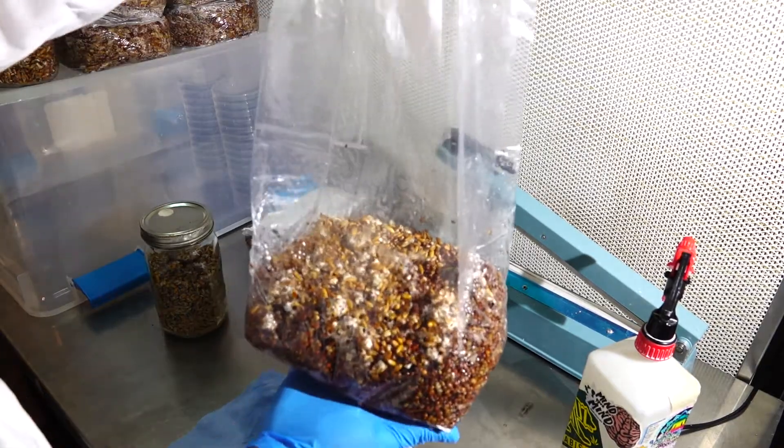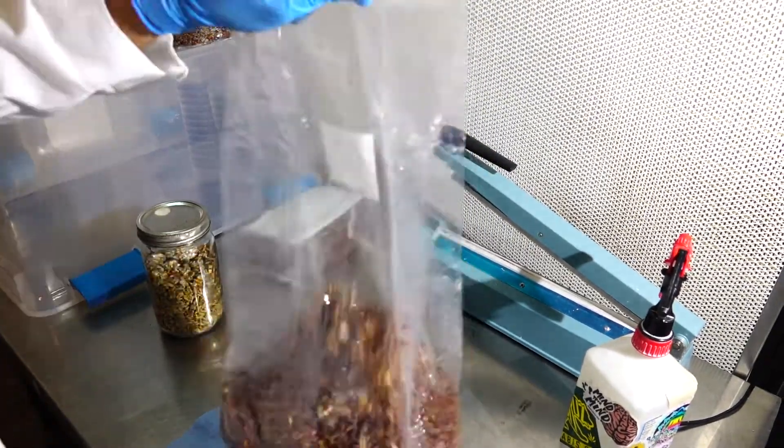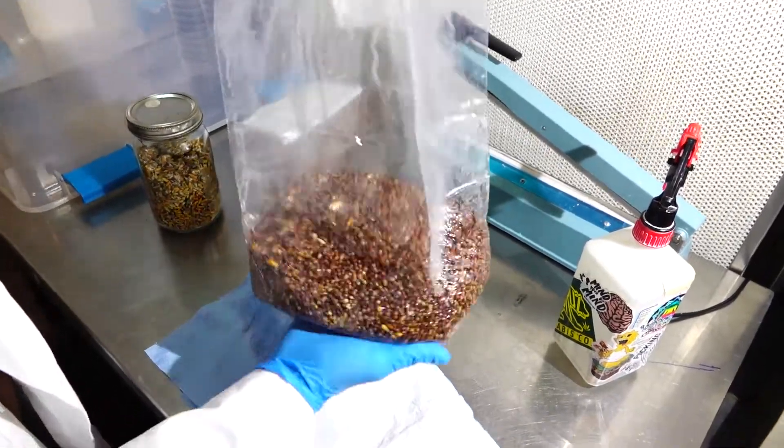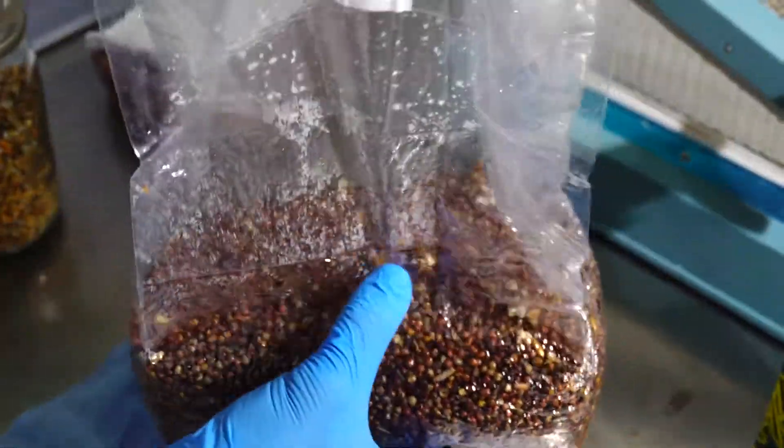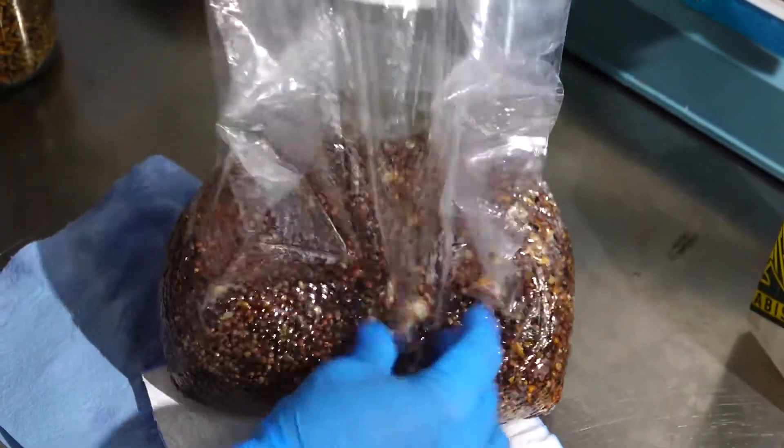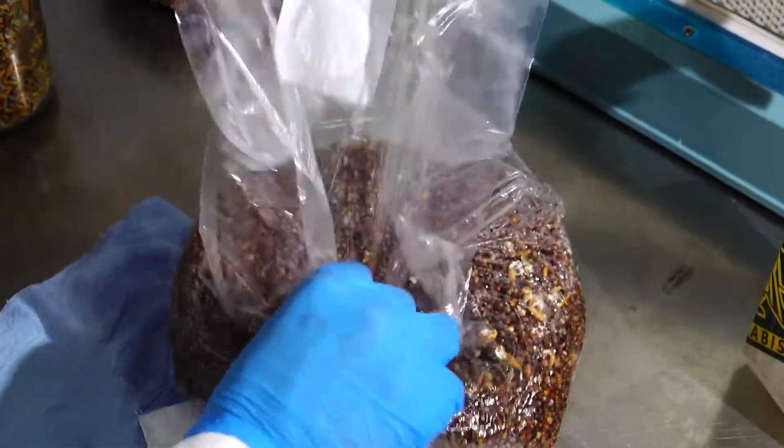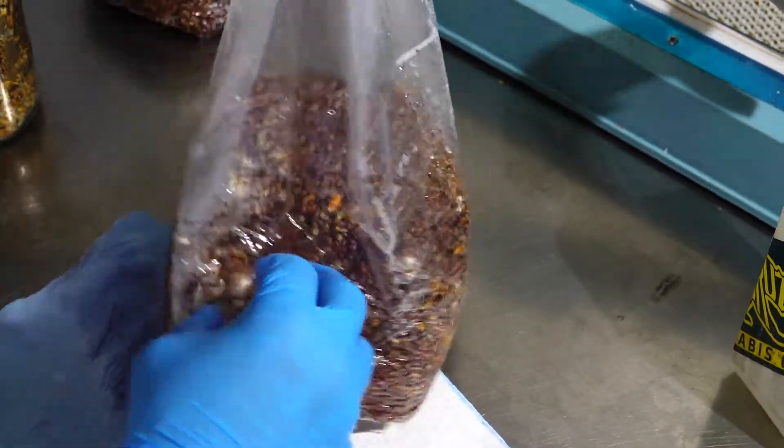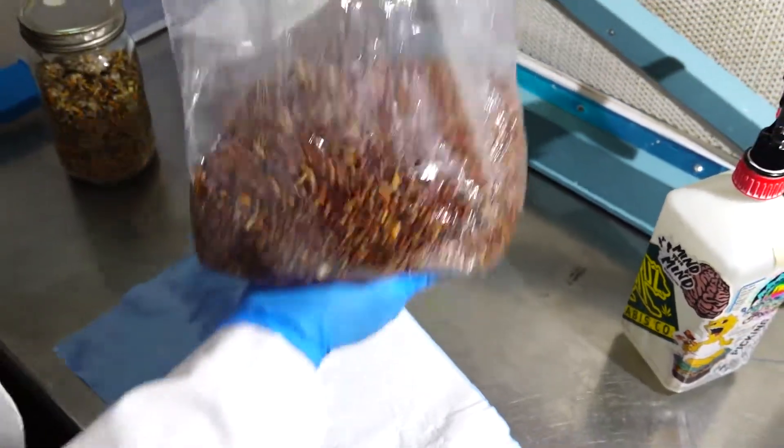The next step is going to be to give your grain a toss so that you can distribute the newly colonized grain into your sterile grain and breaking down any bigger chunks with your fingers and massaging it into the grain. After a couple weeks you'll see some growth and you'll be ready to take it to the next step.